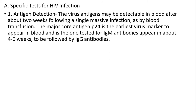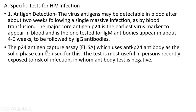Specific tests — first is antigen detection: virus antigens may be detectable in the blood about two weeks following a single massive infection such as by blood transfusion. The major core antigen P24 is the earliest virus marker to appear in the blood and is one tested for, with IgM antibodies appearing about 4 to 6 weeks later, followed by IgG antibodies. The P24 antigen capture ELISA, which uses anti-P24 antibody as the solid phase, can be used. The test is most useful in persons recently exposed to risk of infection when the full antibody test is negative.